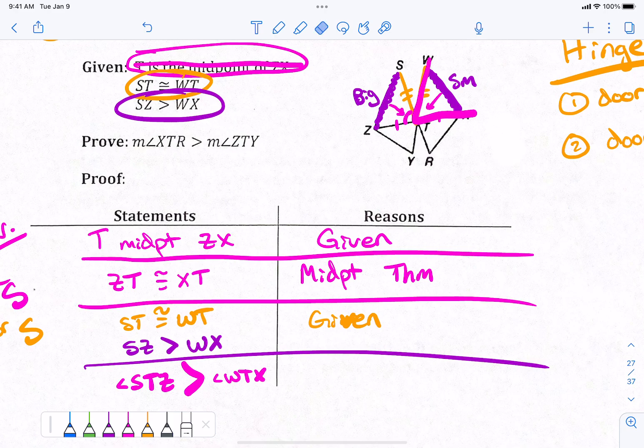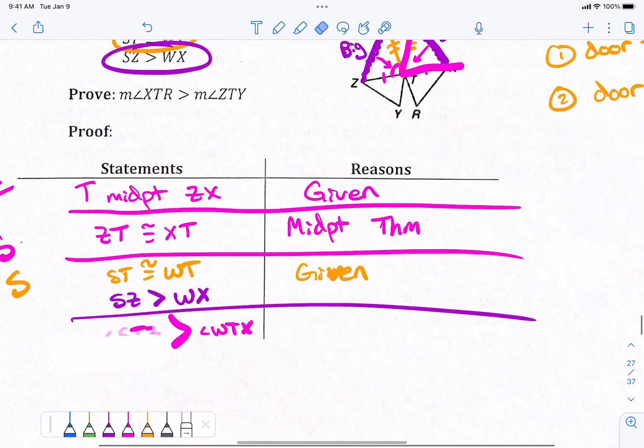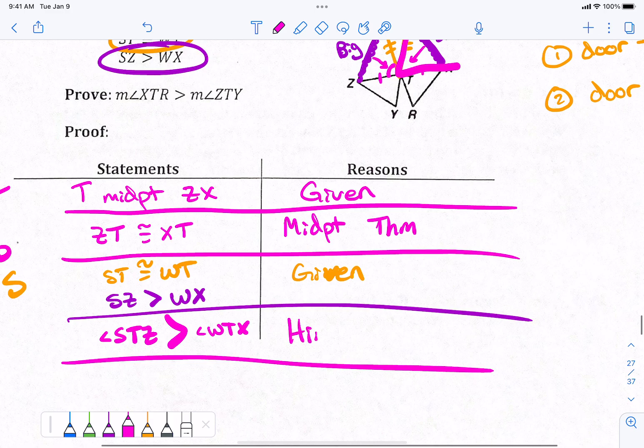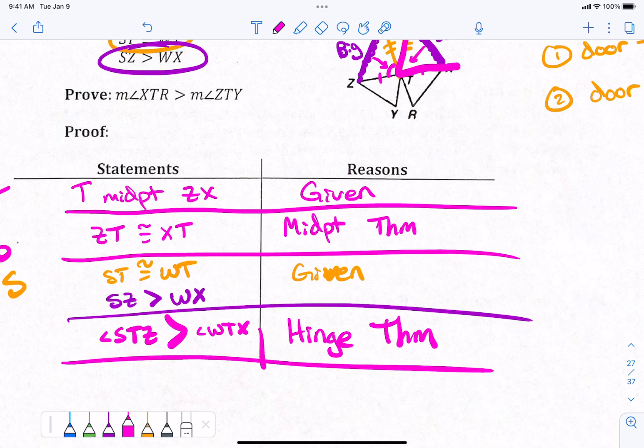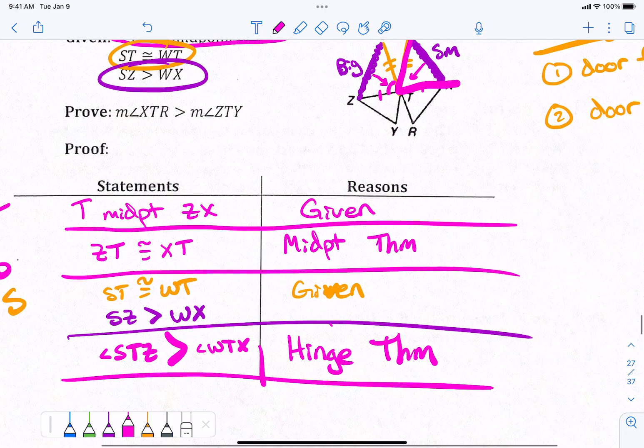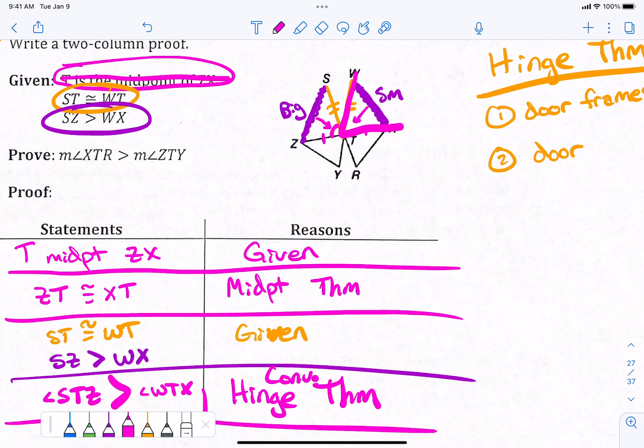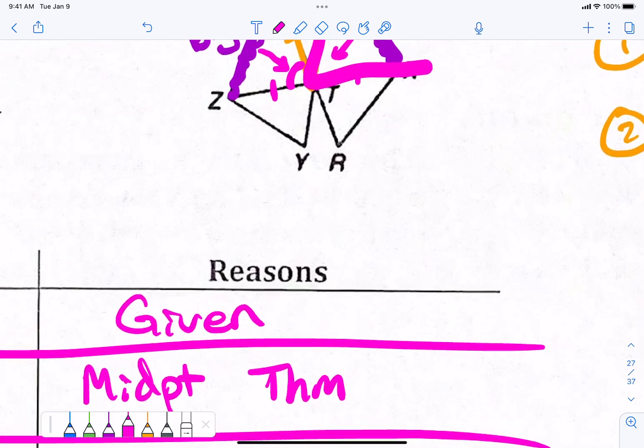Because of the big, small, crisscross thingy. Because of the big, small, crisscross thingy, which is called the? Which is called the hinge theorem. Hinge theorem. Actually, I think that is the converse of the hinge theorem. I'm going to put converse. Because we're talking about the sides and we're going to the angles. So, that's the converse. That's the opposite way. Converse of the hinge theorem.